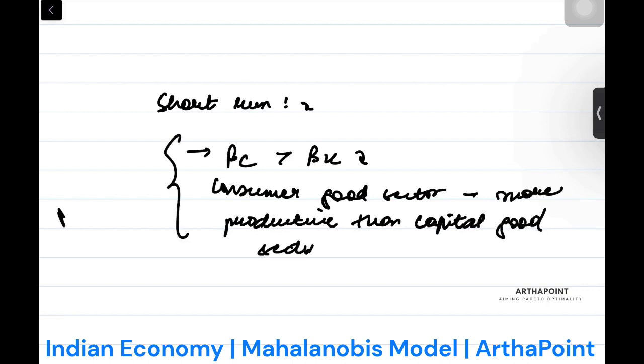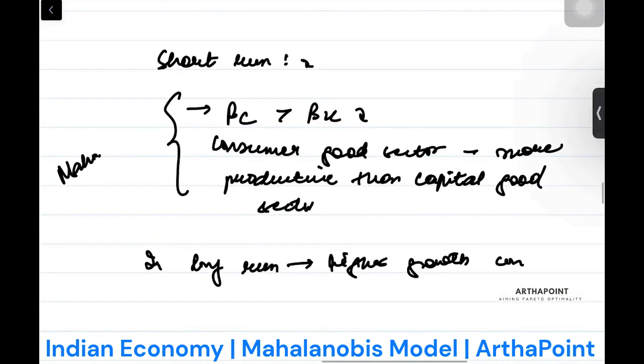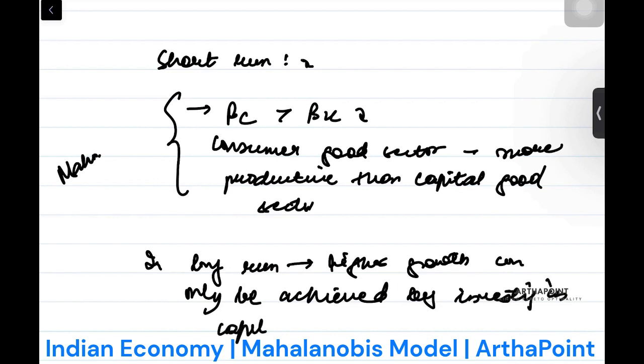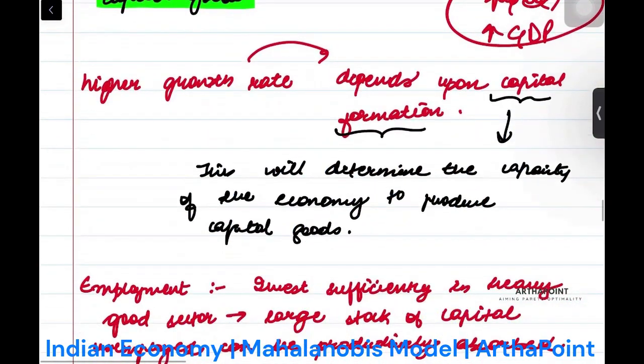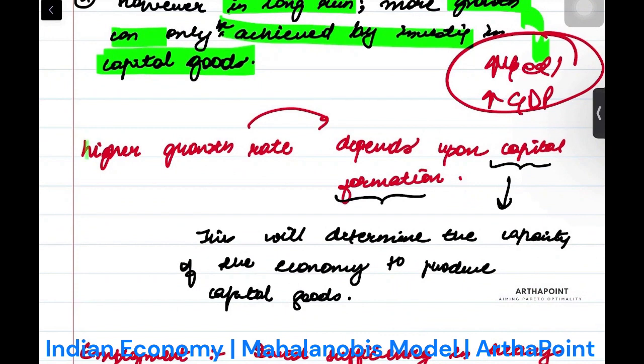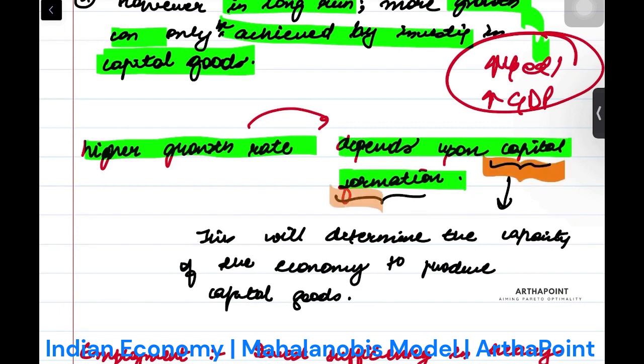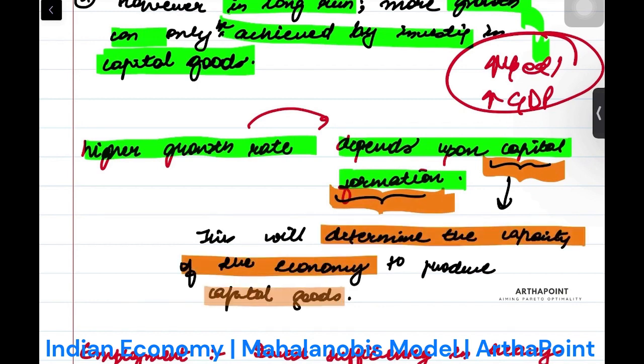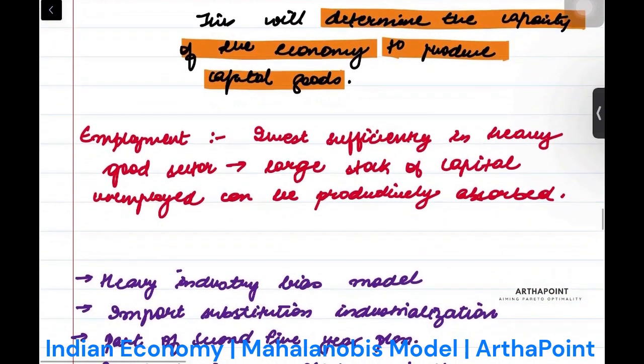So we learned that in short run, beta_c is greater than beta_k, which means consumer good sector will seem more productive than capital good sector. This is according to Mahalanobis only. But in long run, higher growth can only be achieved by investing in capital good sector. Higher growth rate depends on capital formation, and the more capital formation will determine the capacity of the economy to produce capital goods.